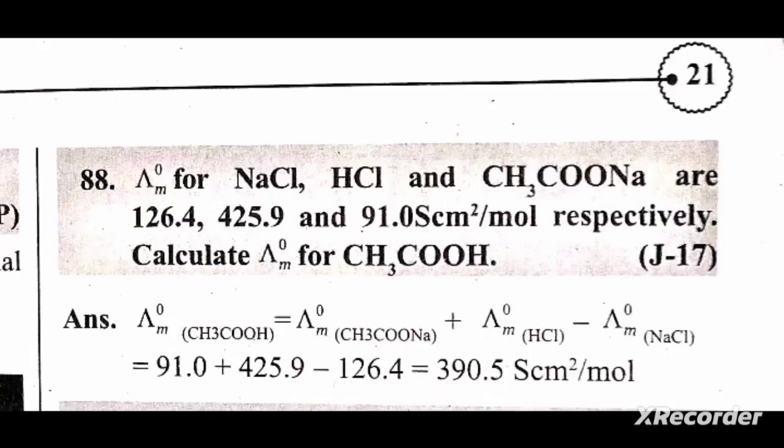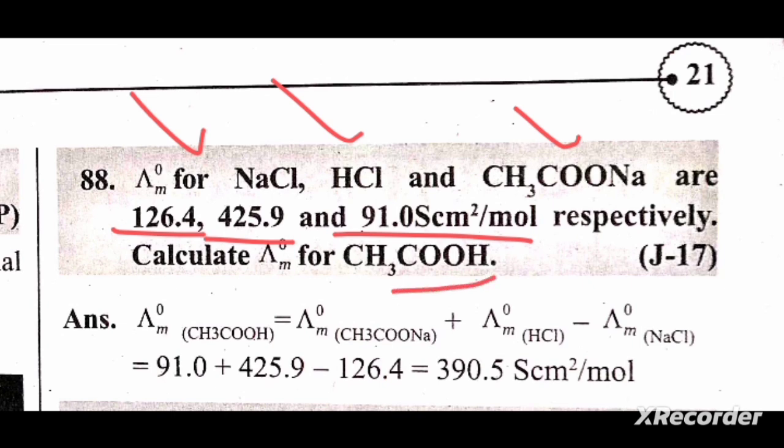This is an electrochemistry numerical based on Kohlrausch's law. The limiting molar conductivity of sodium chloride is 126.4, hydrogen chloride is 425.9, and sodium acetate is 91.0 Scm²/mol. We have to calculate the limiting molar conductivity of the weak electrolyte acetic acid.